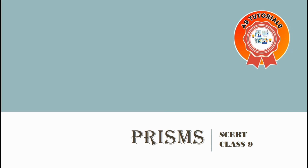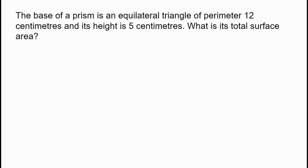Hi, welcome back to our YouTube channel. The base of a prism is an equilateral triangle of perimeter 12 centimeters and its height is 5 centimeters. What is the total surface area? The equilateral triangle has a perimeter of 12 centimeters, height is 5 centimeters, and we need to find the total surface area.